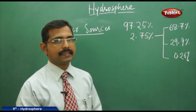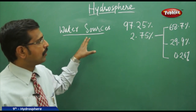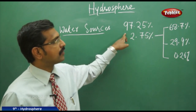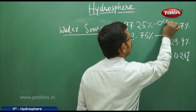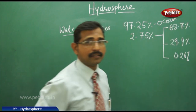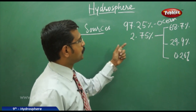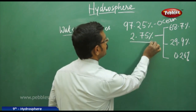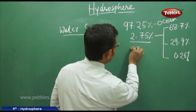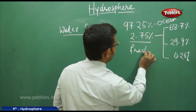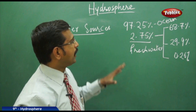Water is present in Earth's crust from various sources. Out of 100%, we have 97.25% from the oceans, which is saline — not usable for agriculture or drinking. The remaining 2.75% is fresh water, which is useful for our purposes.